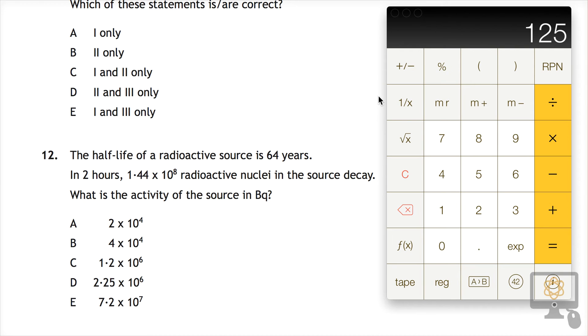Question 12 from the 2014 National 5 Physics paper. It states that the half-life of a radioactive source is 64 years. Now that may or may not be important.